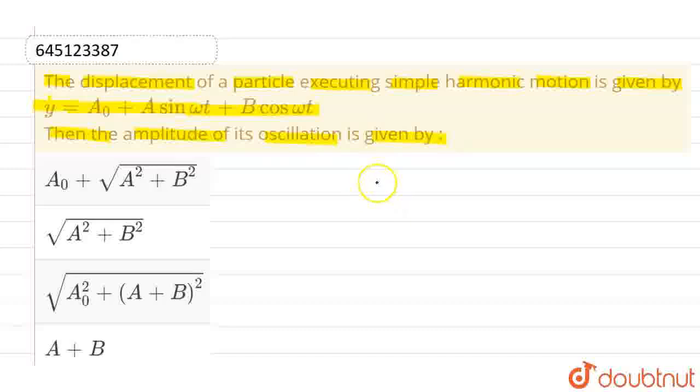Now, as we can see, the equation is given as y equals A0 plus A sin omega t plus B cos omega t. We know that this y is a superposition of two simple harmonic motions. Let this be y1 and this be y2.